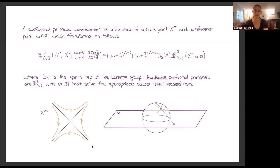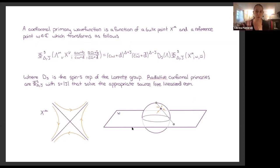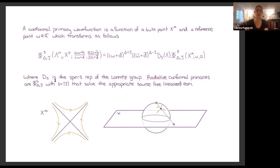A conformal primary wave function is a function of a bulk point and a reference direction, and we want it to have a certain transformation property under a specific transformation of both the bulk point and this reference direction, which we think of as living on the celestial sphere. For the case s equals |j|, that restricts you to radiative conformal primaries. But if you look at massive scattering and relax that, the celestial pyramid becomes a function of s, delta, and j — those are the three directions in which you can move around.